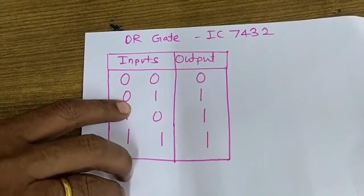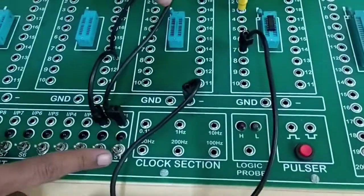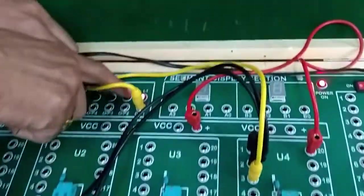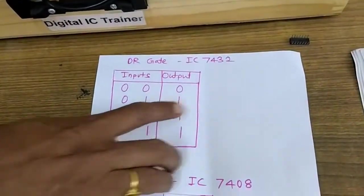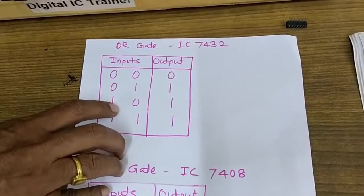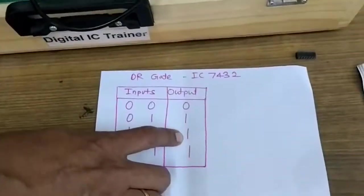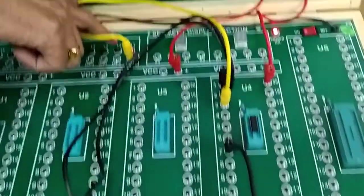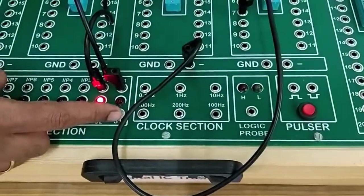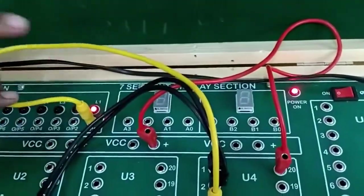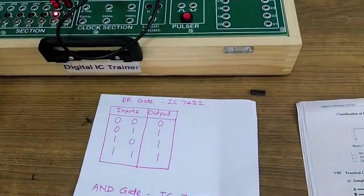Now I have to apply the first input as 0 and second input as 1. First input is 0, second input is made 1, and if you look at the output section the LED is on, meaning I am getting output as 1. So output is 1 and we have verified the second row. Moving to the third row, first input is 1 and second input is 0. First input is made 1 and second input is made 0 — I am expecting 1 as output. If you look, I am getting 1 as output. Finally, when both inputs are 1, output should be 1. Making second input 1, first is already 1, and I am getting 1 at its output. Thus, by using 7432 that is the OR gate IC, I have verified the truth table of the OR gate.